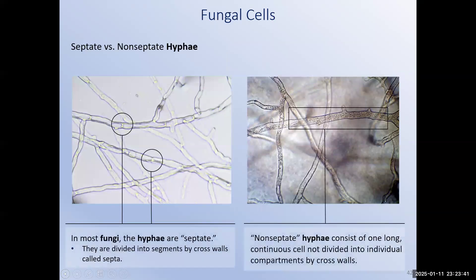Fungal hyphae can be segmented or non-segmented. Segmented hyphae consist of a long chain of fungal cells that have walls between them. These hyphae are compartmentalized, with each cell having its own nucleus. Non-segmented hyphae, or non-septate hyphae, lack the wall, so under the microscope they appear as one long strand that has many nuclei in them.